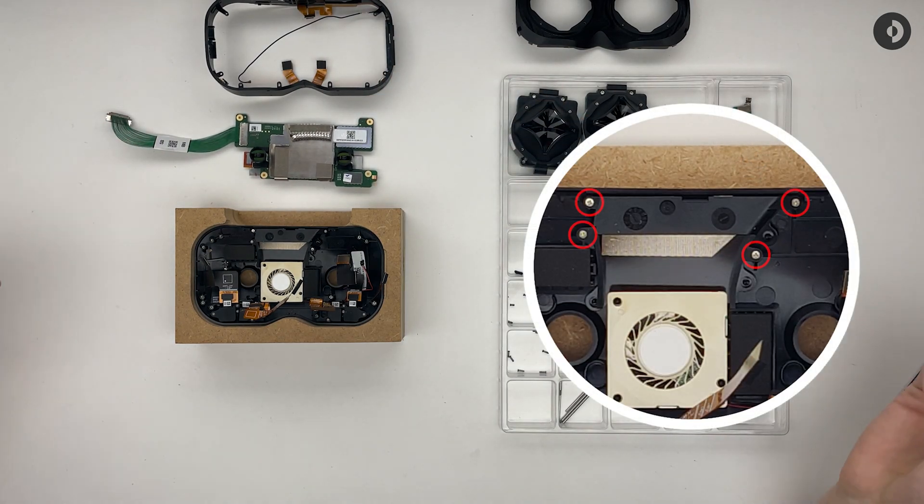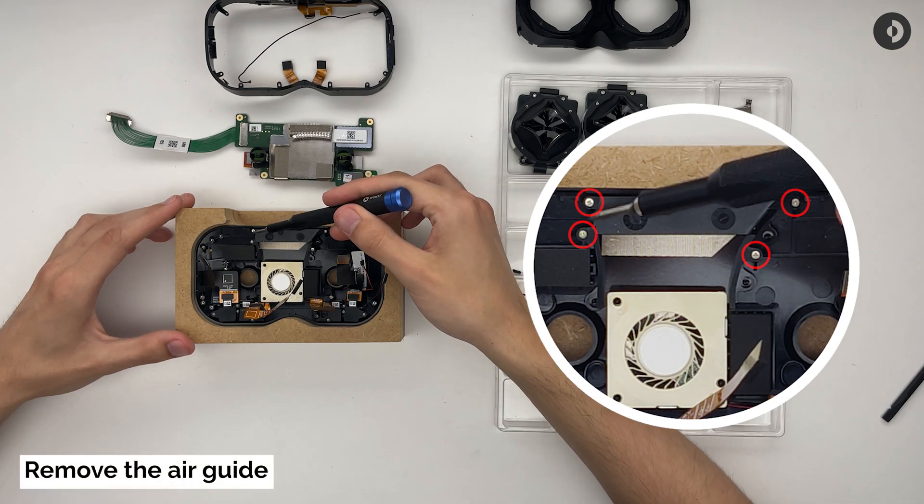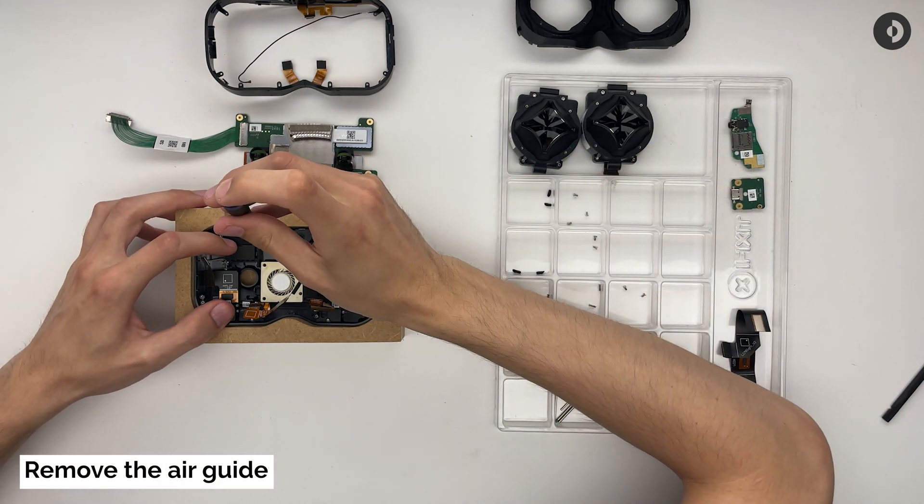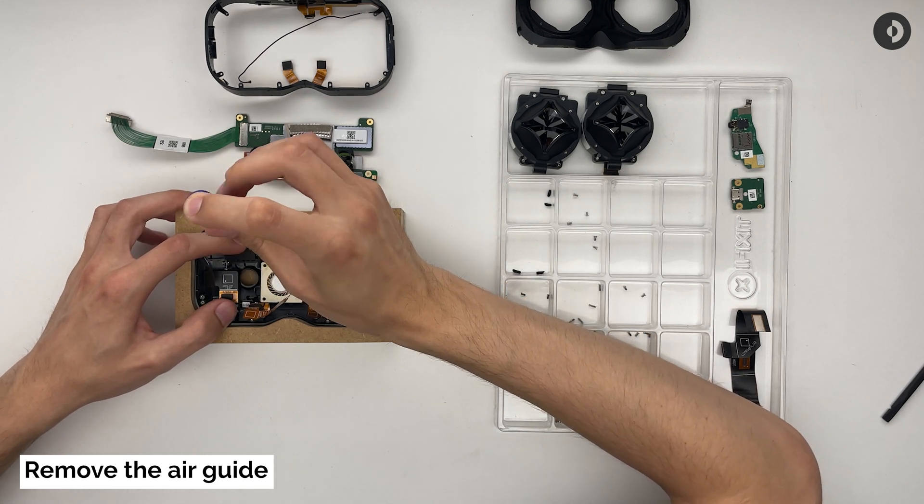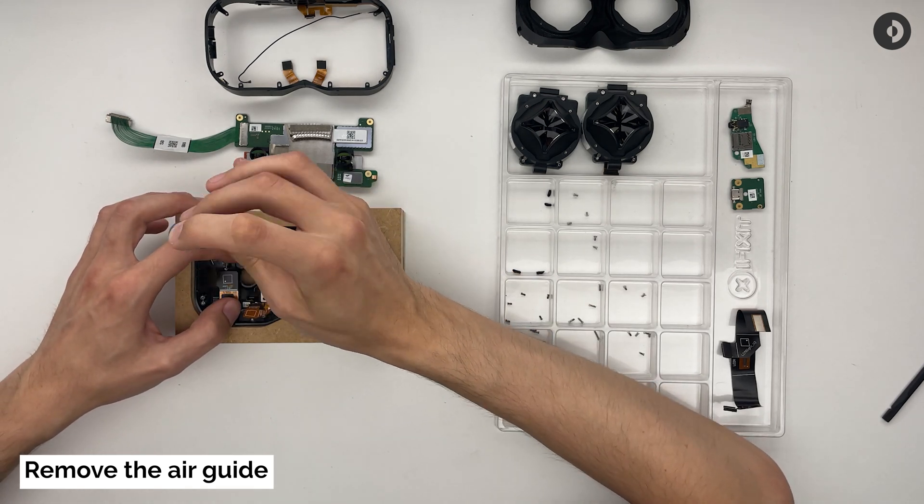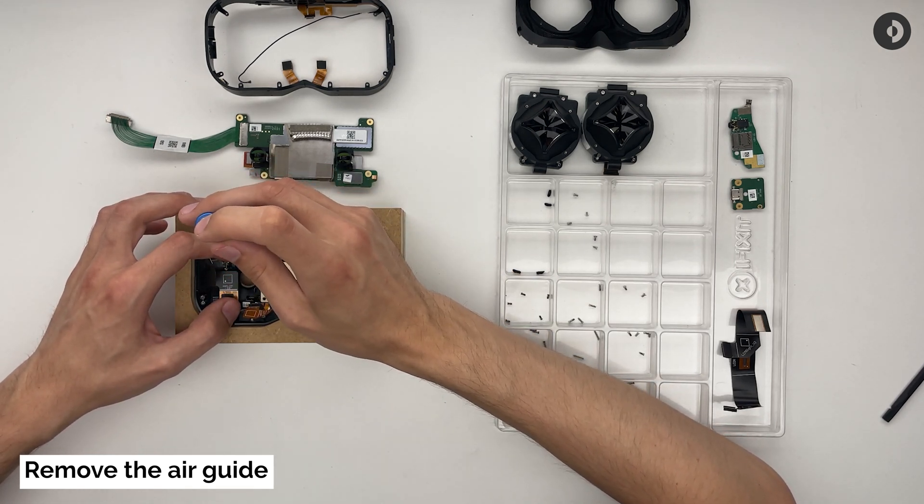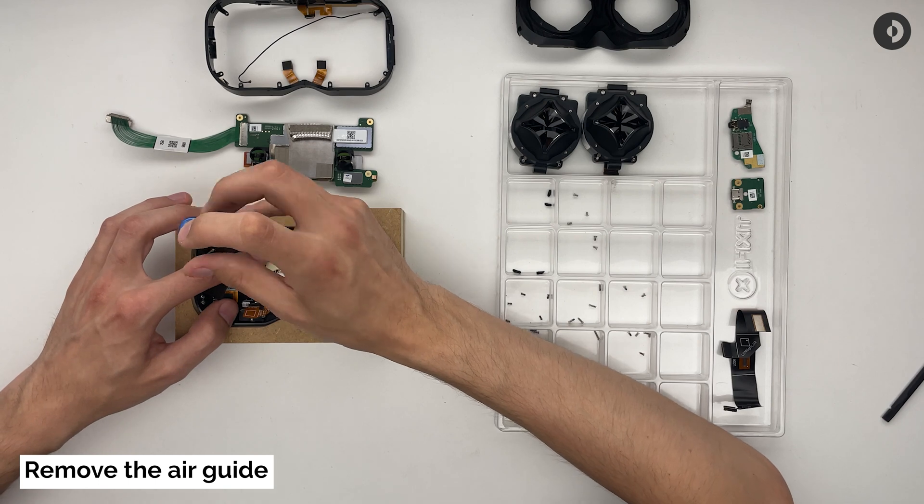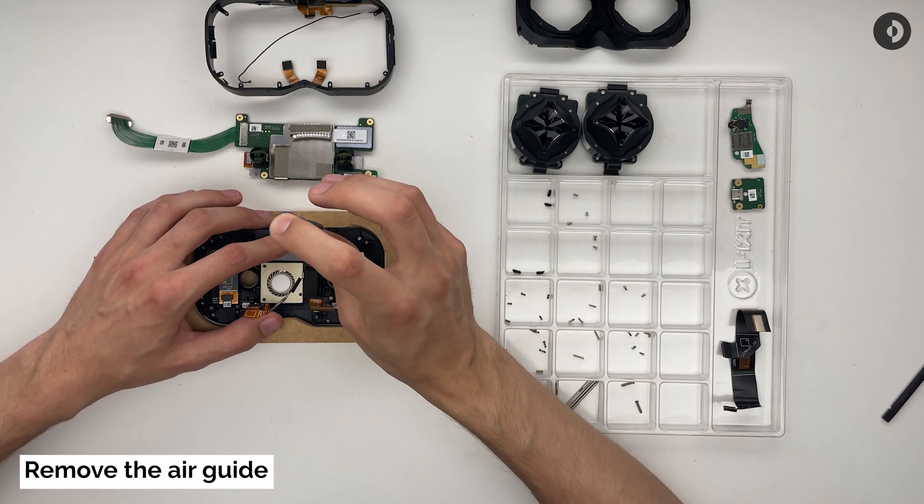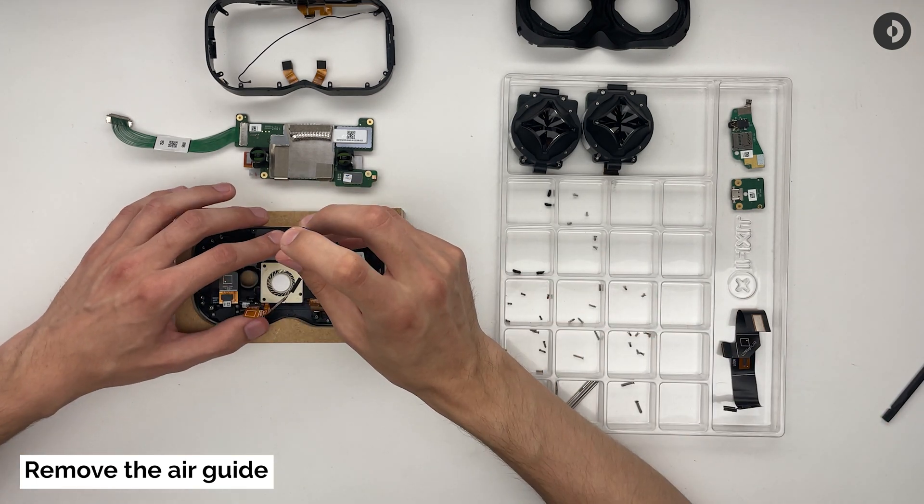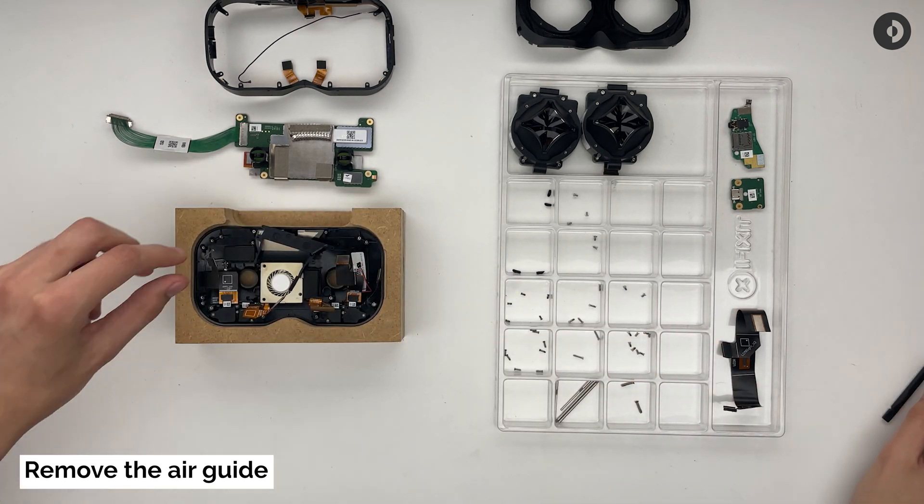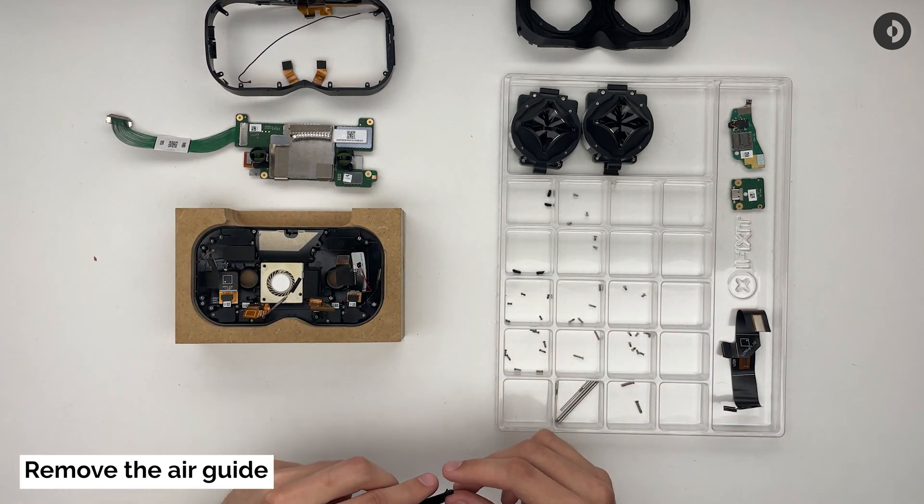Once the main PCB has been removed, you will find four screws. Unscrew them in order to remove the air guide. The whole air guide should come out nicely. Make sure you store it appropriately.